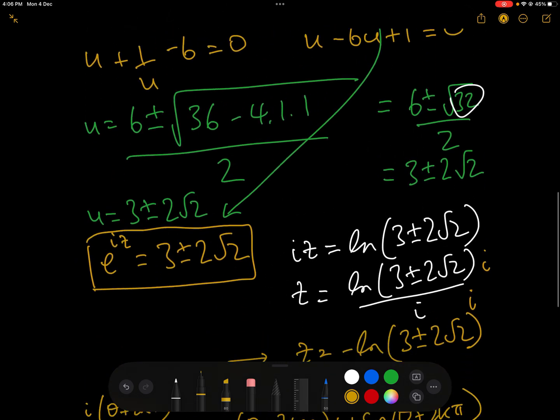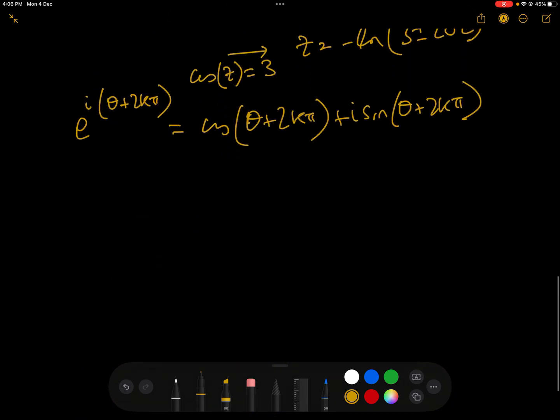Then the steps are exactly the same as we've just taken there. And you will end up with e^(iz + 2kπi) instead of just e^(iz) = 3 ± 2√2.